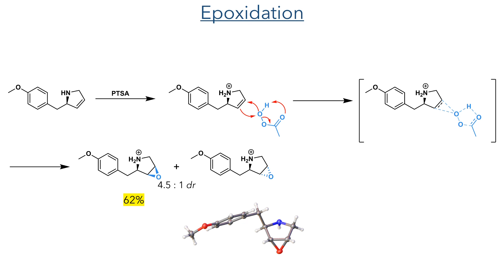This compound was taken forward to an epoxidation. It is first protonated by PTSA, and then peracetic acid is added to the reaction mixture. This undergoes a concerted addition with both carbon-oxygen bonds formed simultaneously, and acetic acid being eliminated as a byproduct. This formed the target compound in a 62% yield, along with the undesired diastereomer, which could be separated by chromatography. Overall, the reaction had a 4.5:1 DR, and the undesired isomer could be crystallised to prove its stereochemistry.